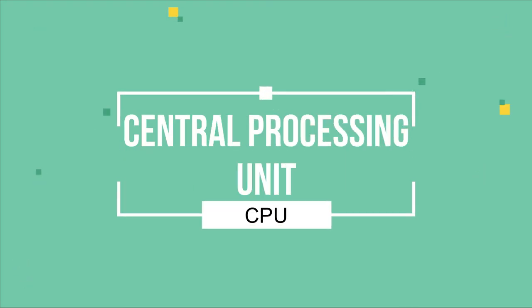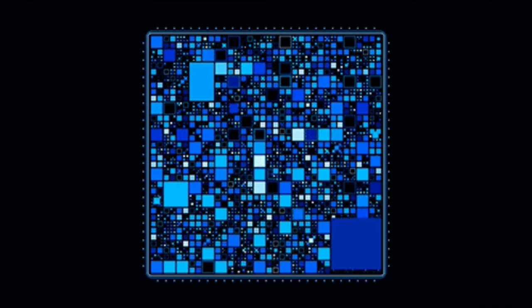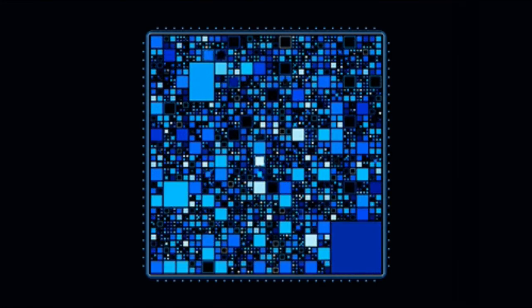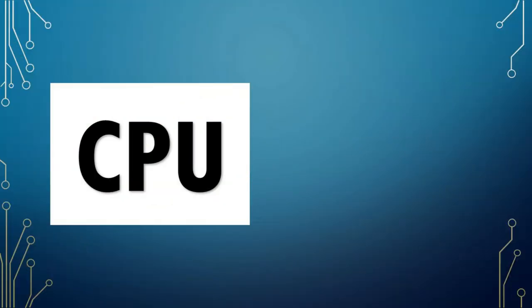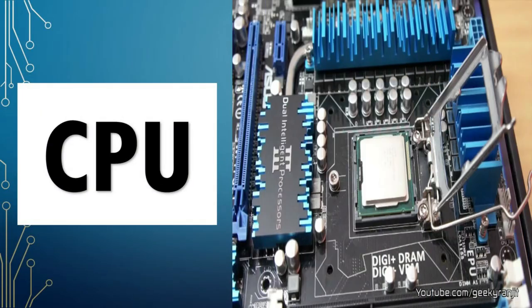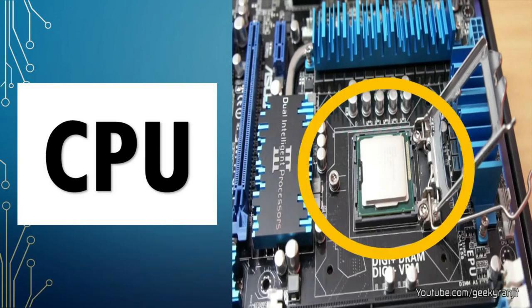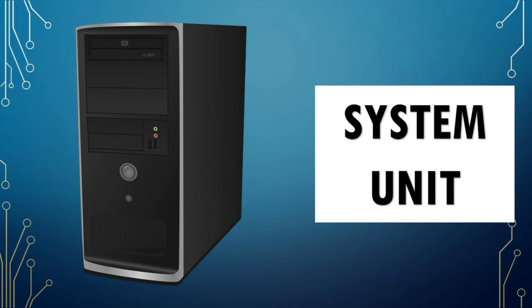The central processing unit, or CPU, acts as the brain of the computer. It typically controls all of the computer's operations and contains all the circuitry needed to input, process, store, and output data. Without it, programs on the computer will not run. The CPU is a small chip attached to the motherboard of the computer. The system unit, on the other hand, is the box-like case that houses all the electrical components of a computer including the motherboard — which contains the CPU. It is also called a tower or chassis.